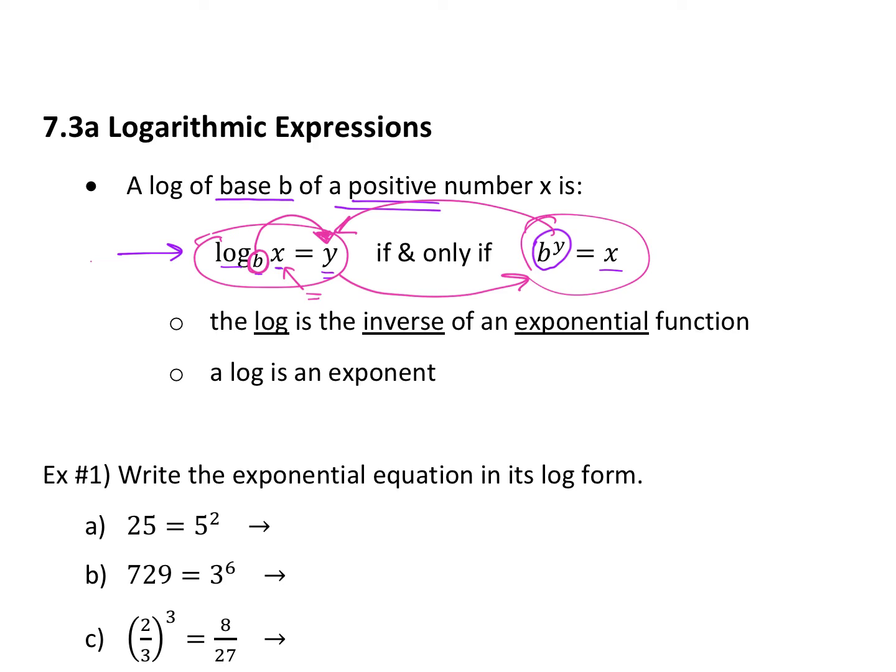So switching the X and the Y essentially is what's happening. A log, when I ask you what is the log to evaluate the log, you're giving me the exponent. It's saying, what is the exponent in this scenario? So a log is always an exponent. I feel like people see logarithm and they're like, what? It's an exponent. That's all it is.